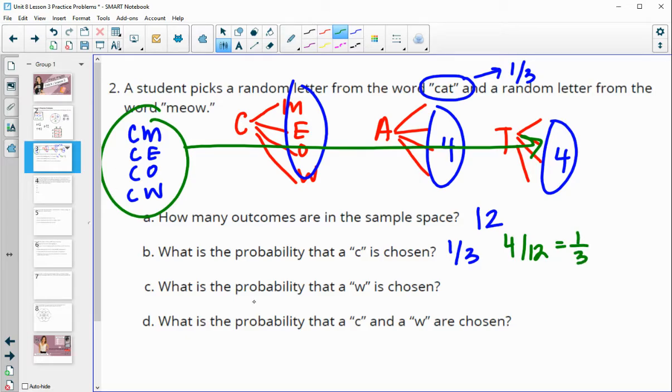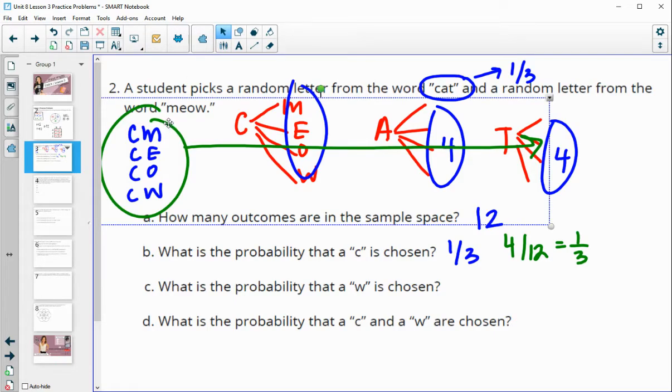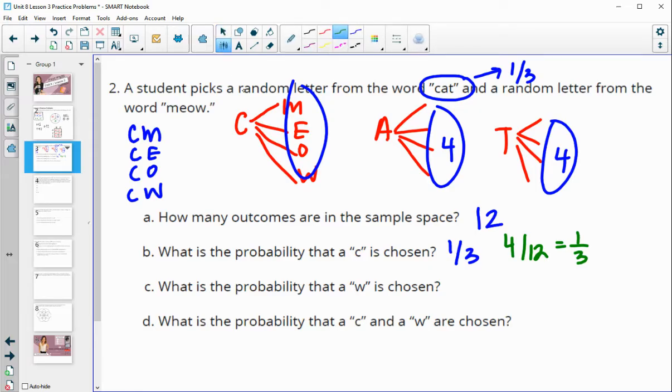So what would the probability that W is chosen be? How many times does W appear? Well, in my table, it's C, W at the bottom, A, W, T, W. So it's going to be in three options out of the 12 total sample spaces. You can also look at it as one in four chance from meow. So three out of 12 will simplify to one fourth of your total sample space options because it's one out of those four letters.